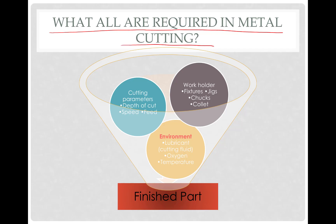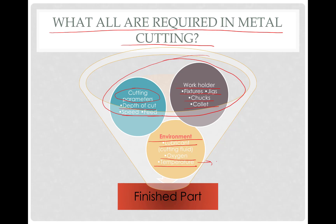So what are the requirements in metal cutting? First, when you have got the drawing, you will be choosing the cutting parameters — depth of cut, speed, and feed. After that, we also require work-holding devices like fixtures, jigs, and collets. Apart from these two, we require the environment: what lubricant or coolant fluid you are going to use, how much oxygen supply is in the cutting zone, and whether it is hot working, cold working, or cryogenic machining.